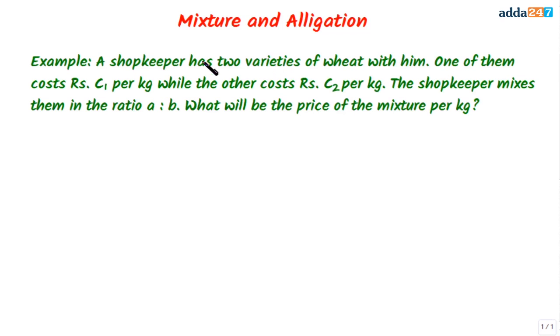Hello and welcome to one more video on concepts. In this video we'll be seeing how to tackle problems on mixture and allegation. Let us try to understand the concept of mixture with an example. A shopkeeper has two varieties of wheat: one costs rupees C1 per kg while the other costs rupees C2 per kg. The shopkeeper mixes them in the ratio a:b. What will be the price of the mixture per kg?